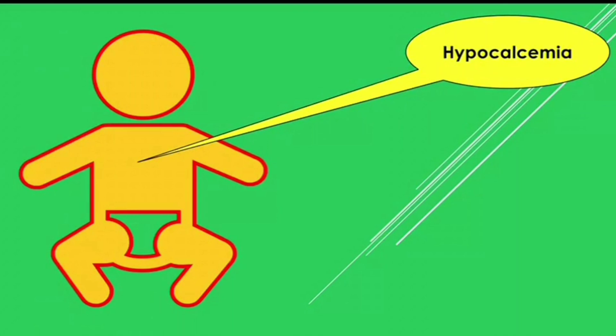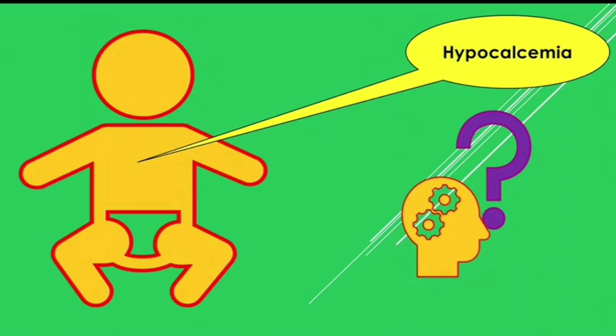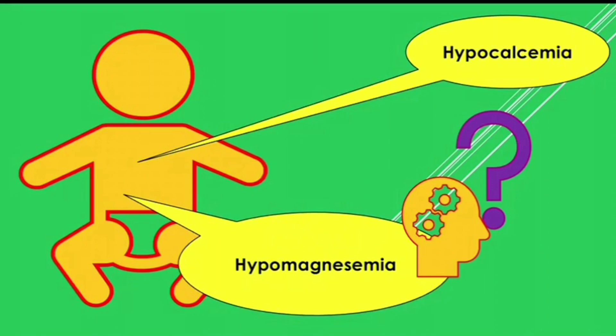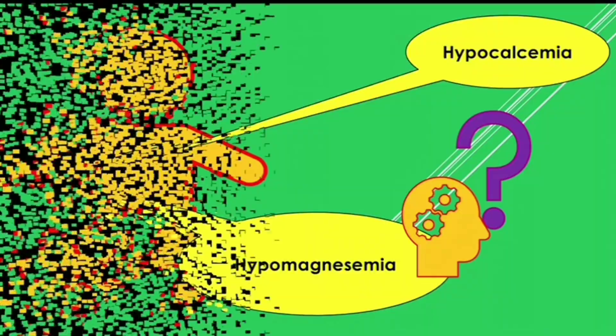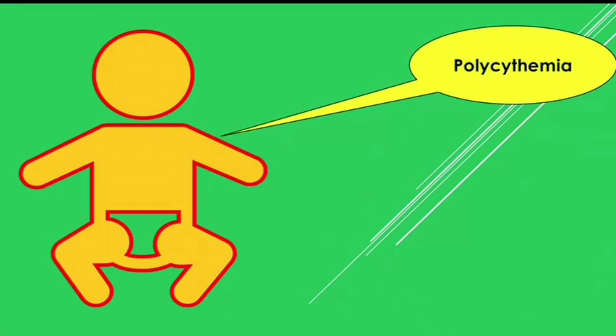The next manifestation is hypocalcemia, which explains why the baby may have seizures. The reason is delayed postnatal rise of parathormone or vitamin D antagonism at the intestinal level. If hypocalcemia is not corrected, also suspect hypomagnesemia in the IDM baby.